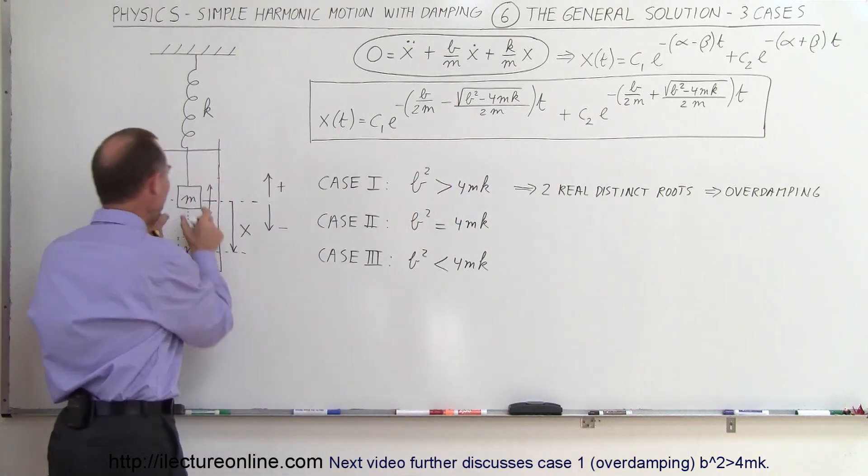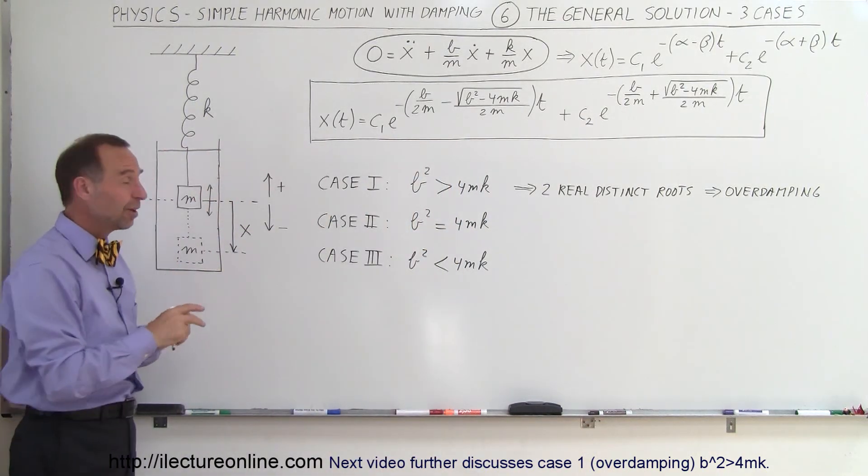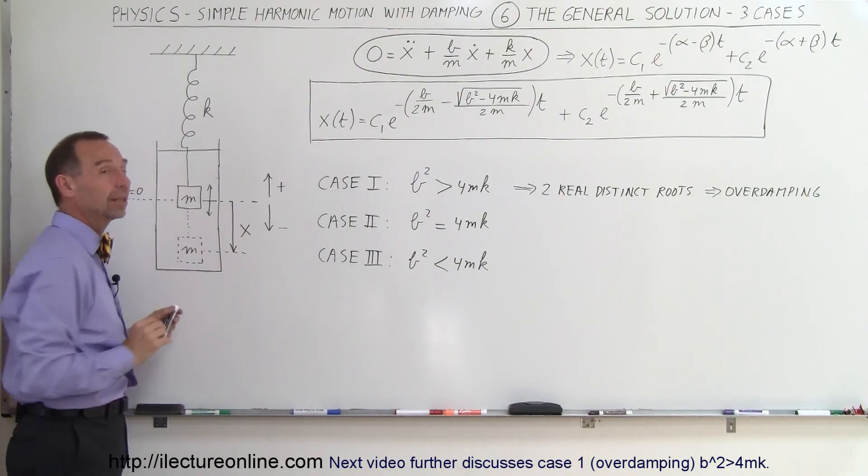In other words, if the mass is displaced from its equilibrium point, B would be so large that it would have a hard time getting back to the equilibrium point.